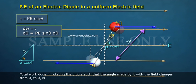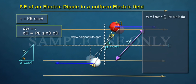Total work done in rotating the dipole such that the angle made by it with the field changes from theta 1 to theta 2 is W equals the integral of PE sin theta d theta equals PE of minus cos theta from theta 1 to theta 2. W equals PE of cos theta 1 minus cos theta 2.